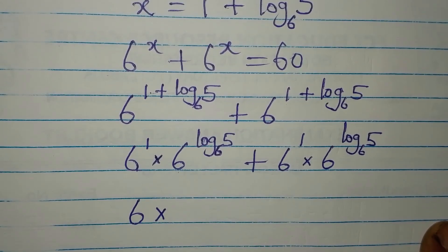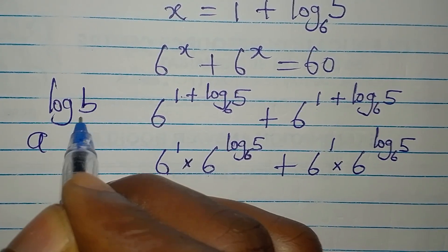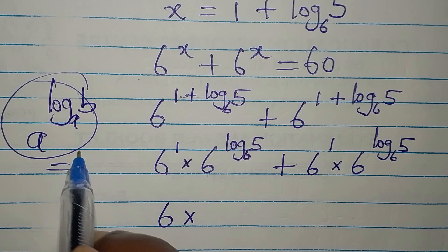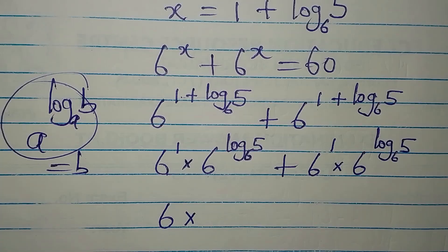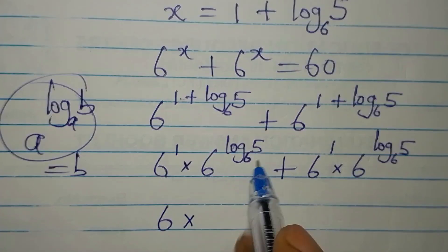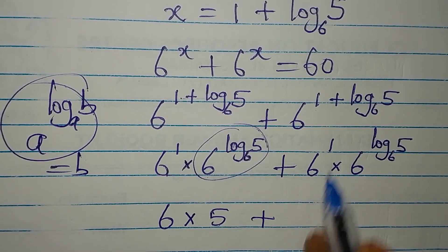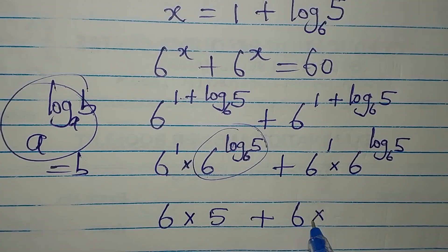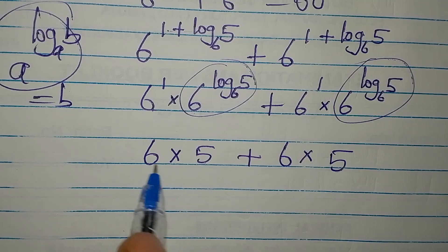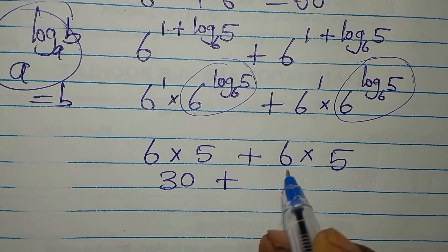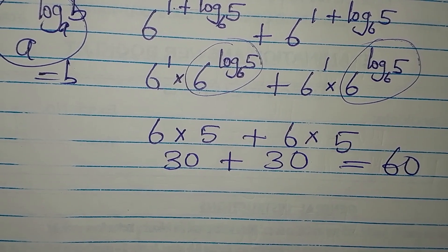Now, note that if you have a to the power of log_a(B), this equals B — same base, so they cancel. So 6 to the power of log₆5 equals 5. Therefore, each term becomes 6 times 5 = 30, and 30 plus 30 gives 60.